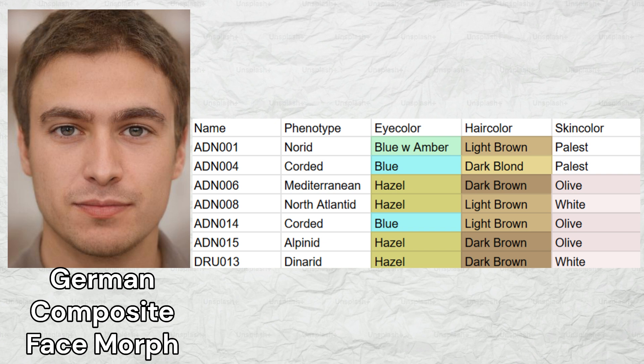Two samples were predicted to have blue eyes, one sample was predicted to have blue eyes with an amber center ring, and four samples were predicted to have hazel eye color. Three samples had dark brown hair, three samples had light brown hair, and one sample had dark blonde hair. No samples were predicted to have black, light blonde, or red hair. The most common skin color among them was olive, which three people had, followed by white and palest, which two people had each.